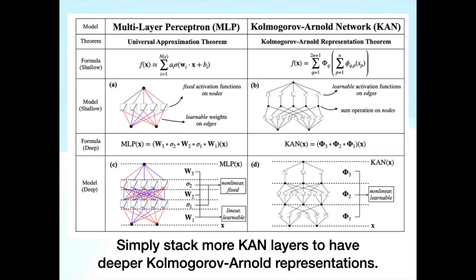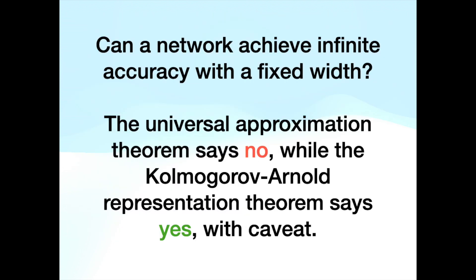Simply stack more KAN layers to have deeper Kolmogorov-Arnold representations. Can a network achieve infinite accuracy with a fixed width? The Universal Approximation Theorem says no, while the Kolmogorov-Arnold Representation Theorem says yes, with caveats.